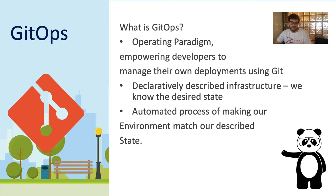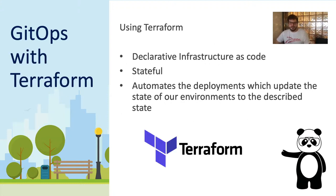GitOps depends on having a declaratively described infrastructure — meaning we define what the actual environment should look like, and then we have an automated process for making our environment match that described state. To do this, we're going to use HashiCorp's Terraform. Terraform is a declarative infrastructure-as-code tool which allows us to perform deployments to the cloud using code. Terraform is stateful, which means it can deploy infrastructure and also store the expected state of that infrastructure. So if someone makes a manual change to deployed infrastructure, Terraform can detect it and revert it back to the expected state the next time it runs.